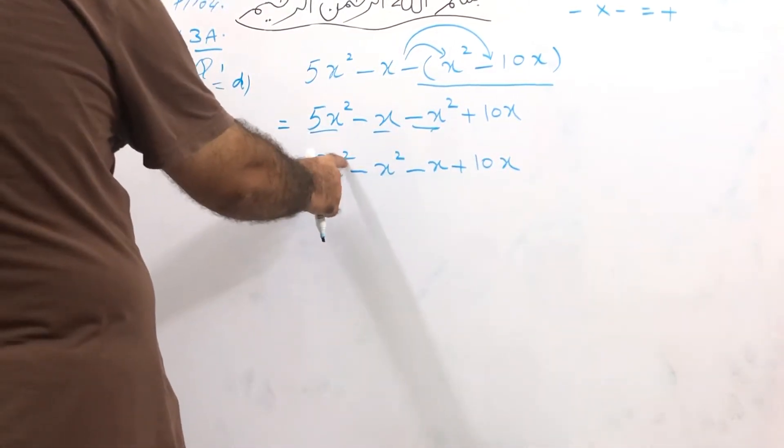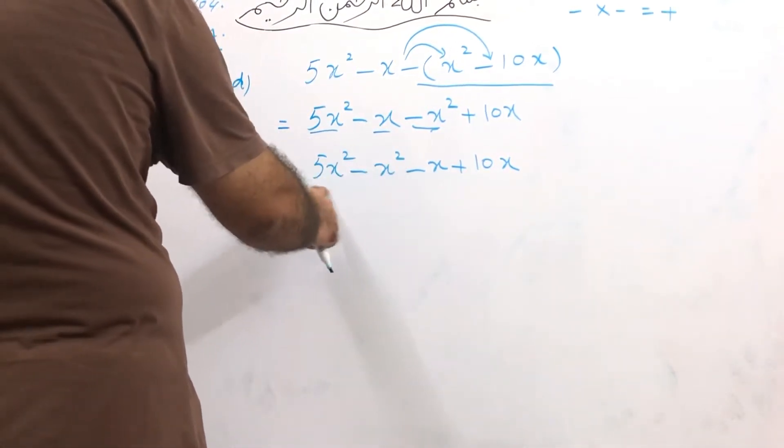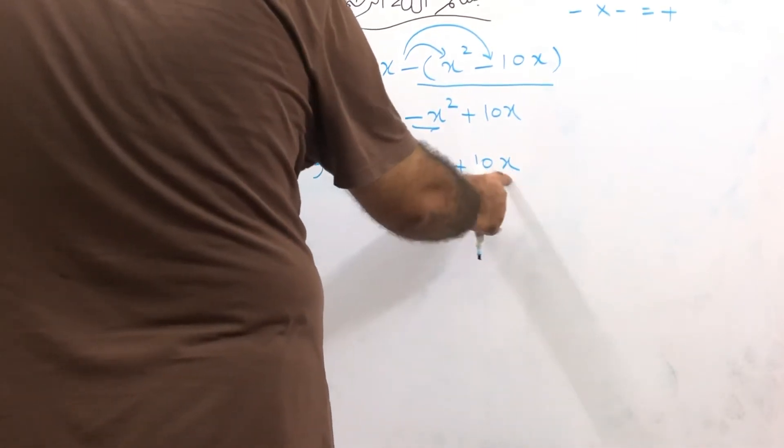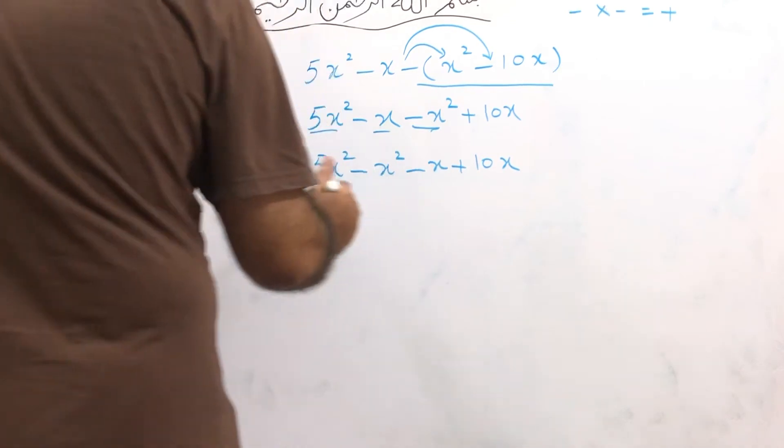Here x has power 2, and x has power 2, these are close. This x has power 1, this x has power 1, these are close. Now we will simply solve, plus minus.